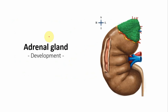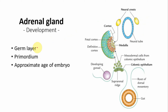Now let us cover the adrenal gland, also referred to as the suprarenal gland. Just as we covered the pituitary gland under four headings, we will cover the adrenal gland similarly: germ layer of origin, primordium, approximate age, and clinical correlations or anomalies.